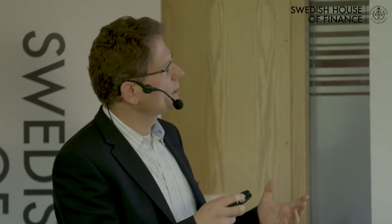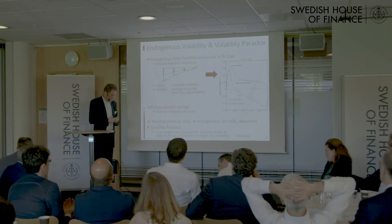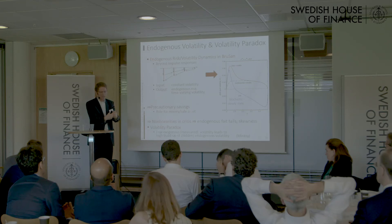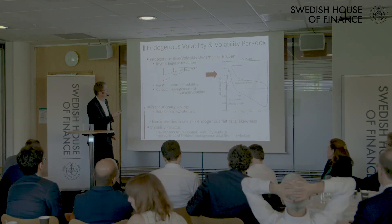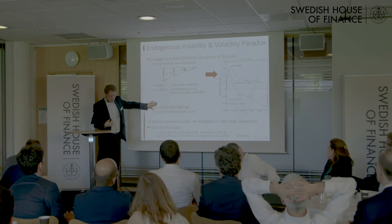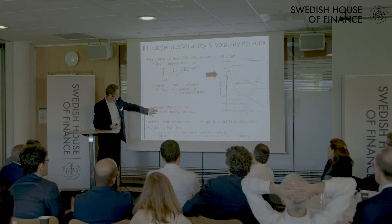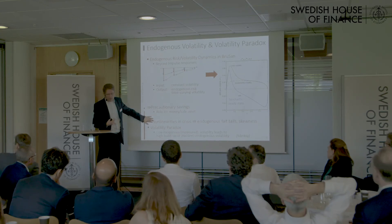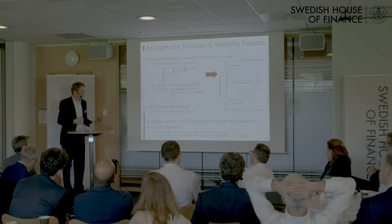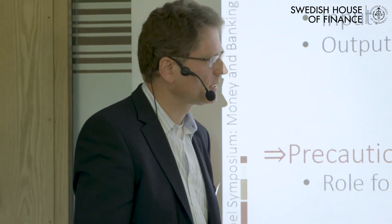More recently, what's important is endogenous risk: rather than feeding in an exogenous volatility process, you feed in a constant volatility process but the volatility itself becomes endogenously time-varying, and so does the risk premium. Going beyond the impulse response function, you have a precautionary savings motive that is time-varying, giving a role for money as a store of safe value, and you naturally get all these non-linearities. This produces endogenous fat tails, skewness, and the volatility paradox: whenever exogenous volatility is very low, endogenous volatility will be much higher, and total volatility is roughly stable — so measured volatility below the surface may be building up in the background.